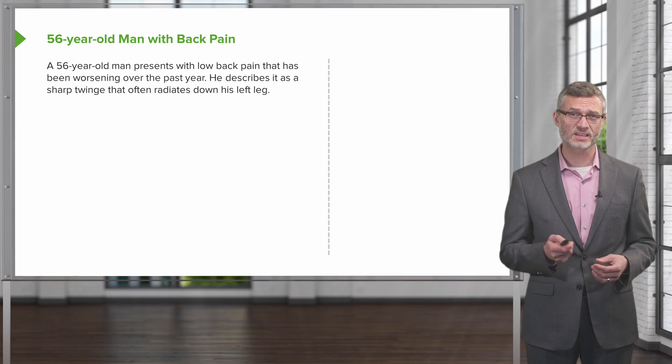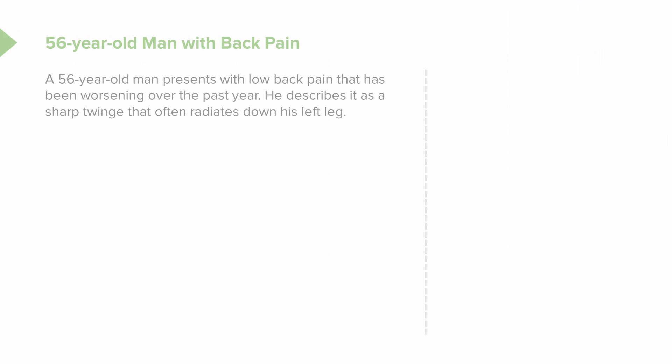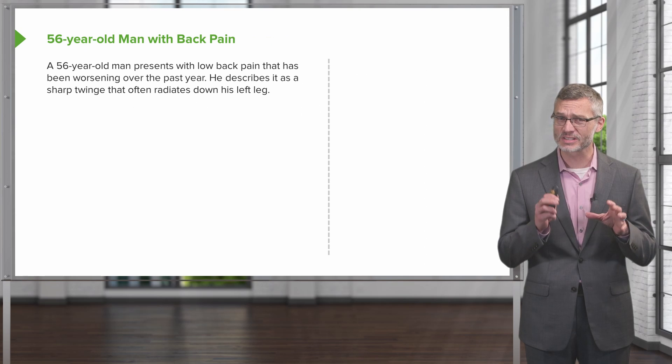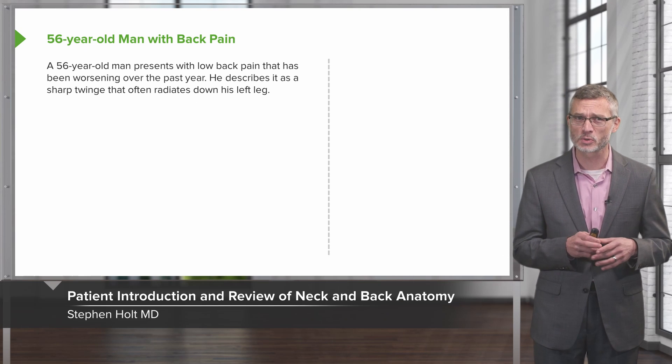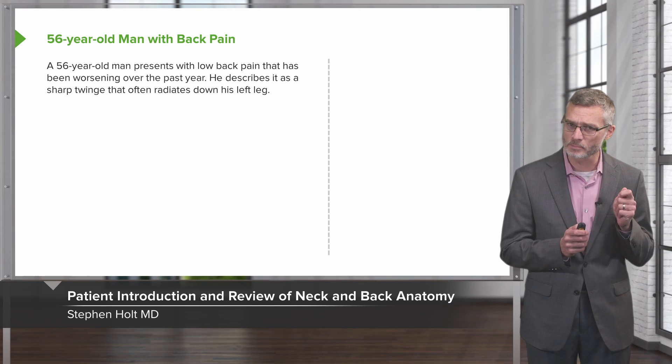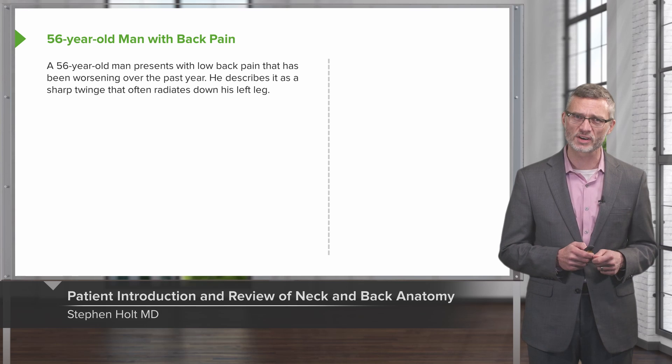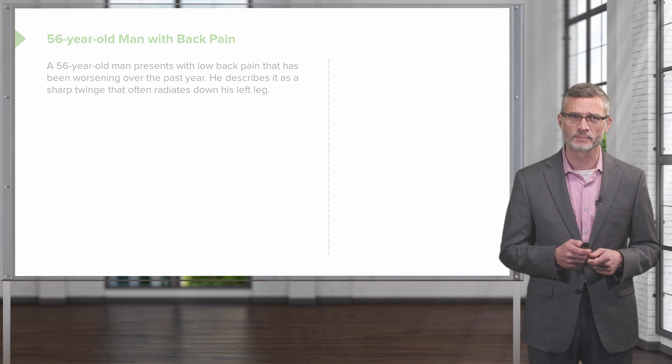Let's start with a case of a patient with back pain. A 56-year-old man presents with low back pain that has been worsening for the last year. He describes it as a sharp twinge that often radiates down his left leg. There are a lot of potential possibilities for this person's pain, and it's going to be really important for us to use our exam skills to tease apart what's going on.